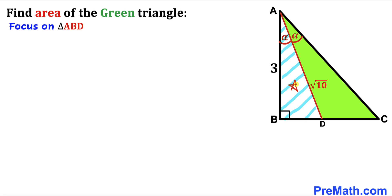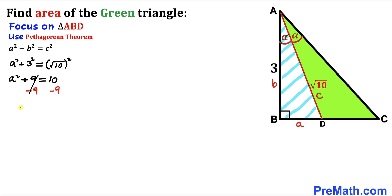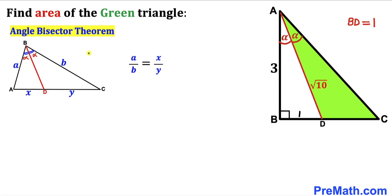Let's focus on right triangle ABD and apply the Pythagorean theorem to calculate base BD. Using a² + b² = c², where c is the hypotenuse AD = √10 and one leg is AB = 3: we get a² + 3² = (√10)², so a² + 9 = 10, giving a² = 1, and therefore a = 1. So BD = 1 unit.